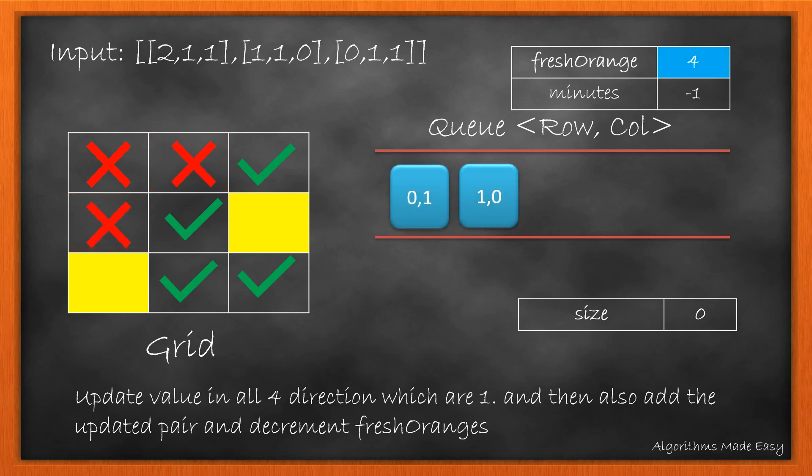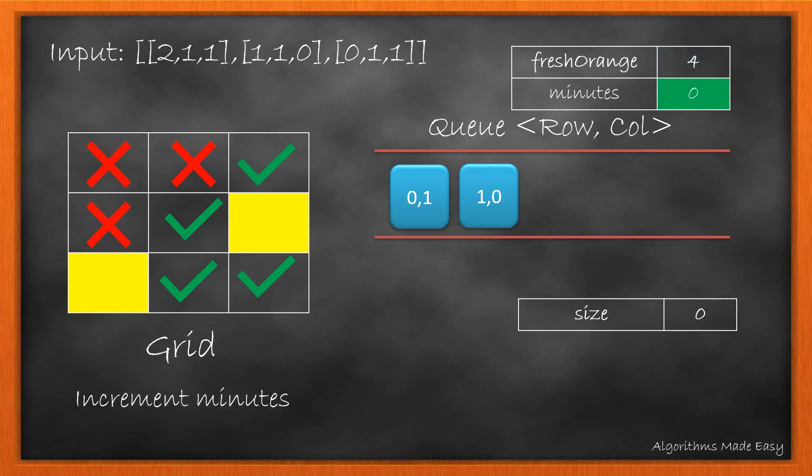So we update them to 2 and add their index into the queue, also decrementing the fresh orange count. As size becomes 0, we come out of the inner loop and then increment the minutes.